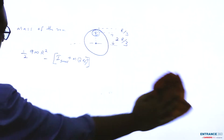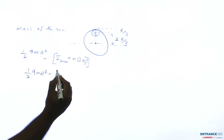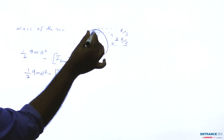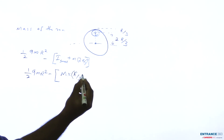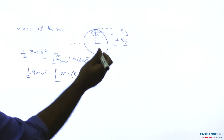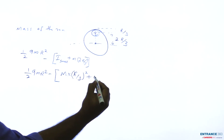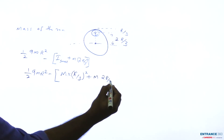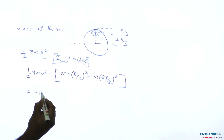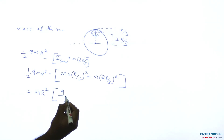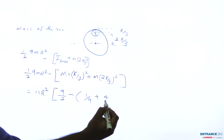Now we substitute m. The expression becomes (1/2) × 9m × r² minus the moment of inertia of the small disk about its central axis, which is m × (r/3)², plus the parallel axis term m × (2r/3)². We can factor out mr² to get mr² times (9/2 − 1/9 + 4/9).